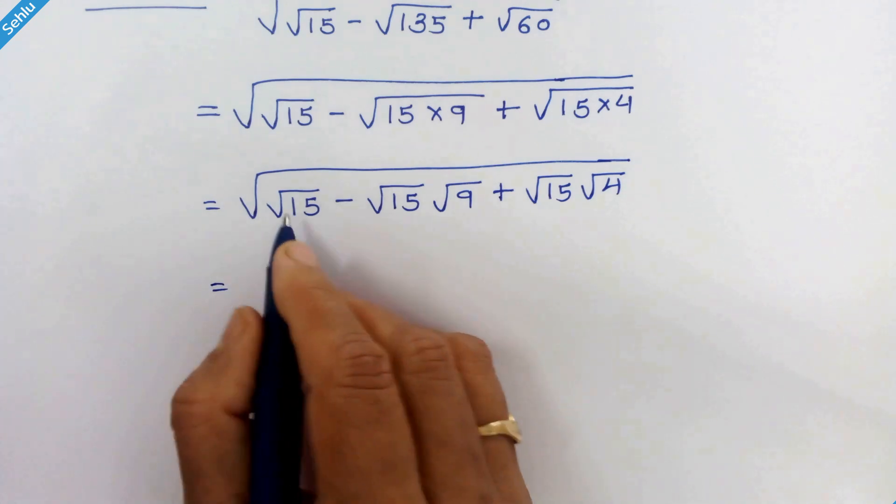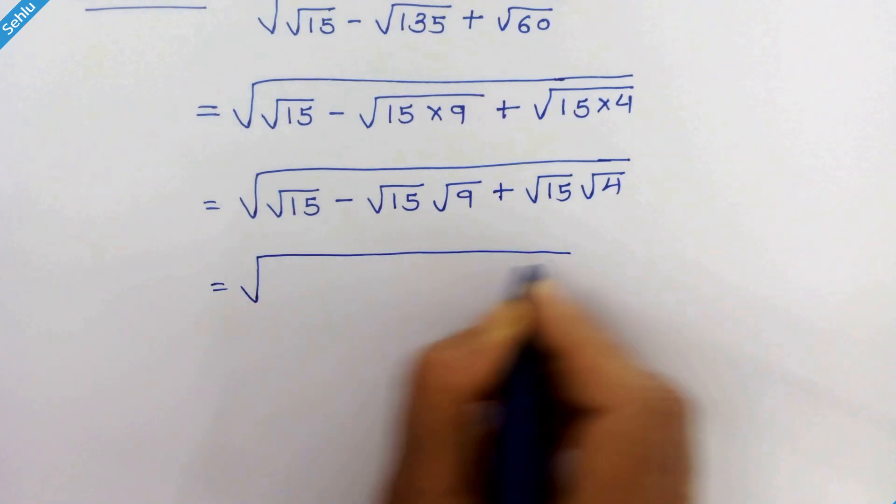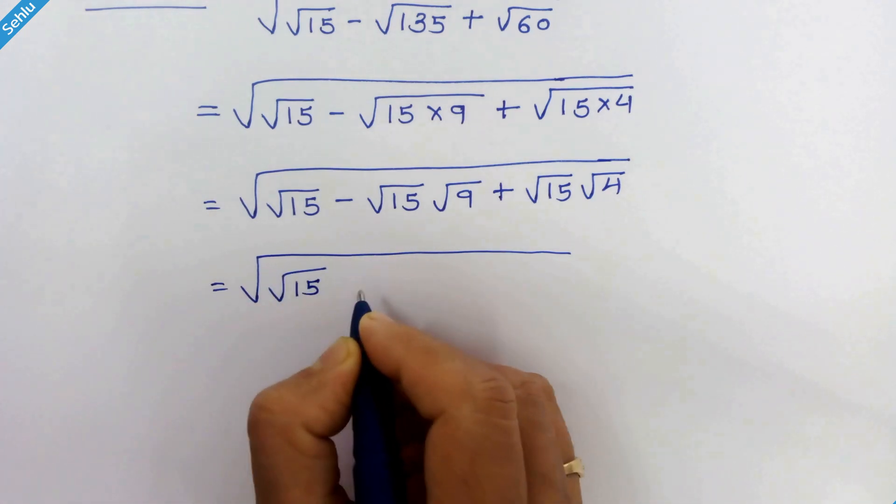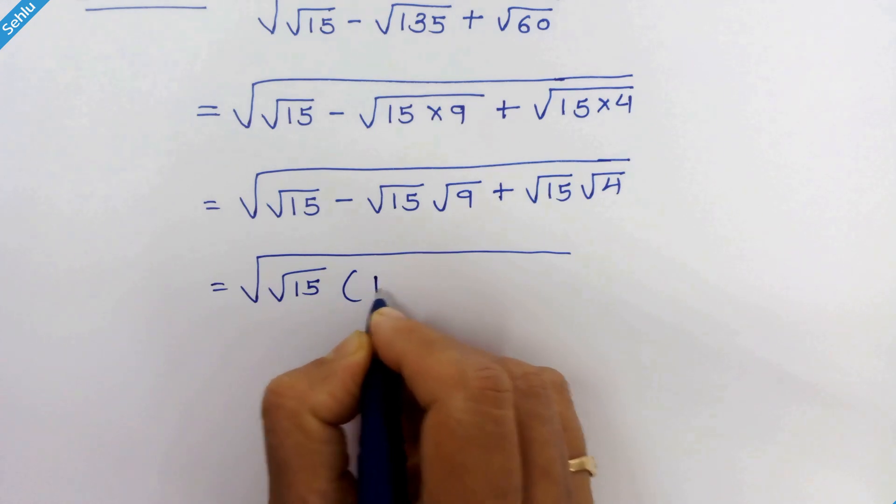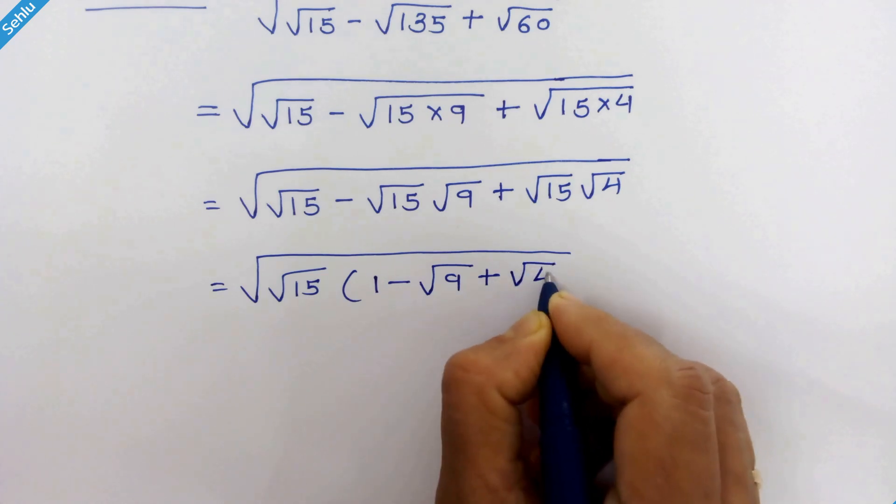Now here we can factor out square root 15. So we have square root of square root 15 times 1 minus square root of 9 plus square root of 4.